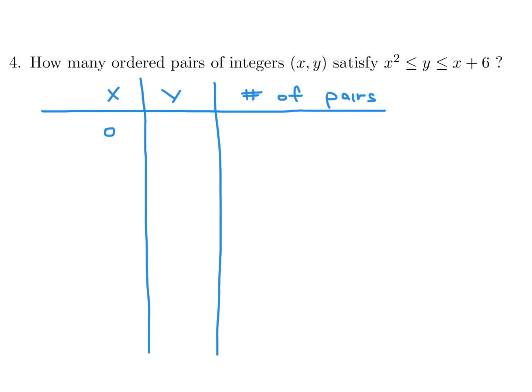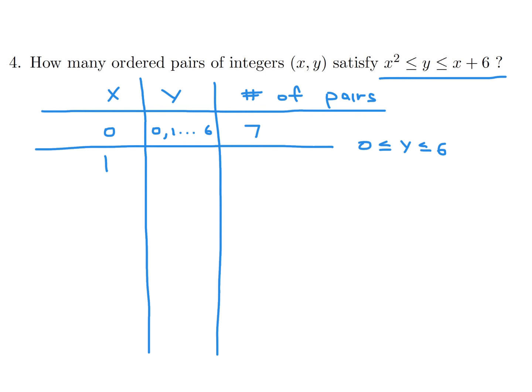If x is 0, then y is less than or equal to 6 and greater than or equal to 0, so y can be 0 through 6 — that's 7 pairs. For x equals 1, the inequality becomes 1 less than or equal to y less than or equal to 7, so y can be 1 to 7 — another 7 pairs.